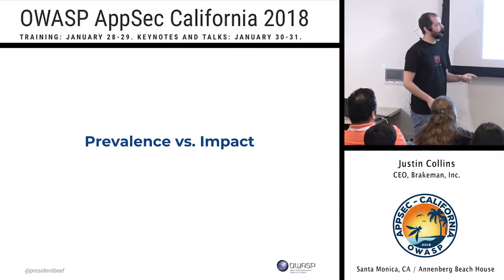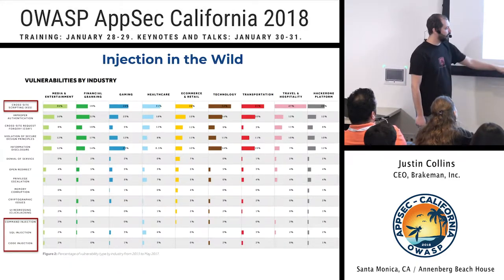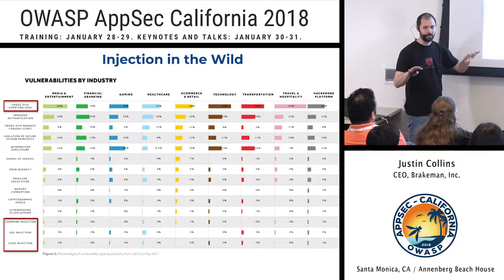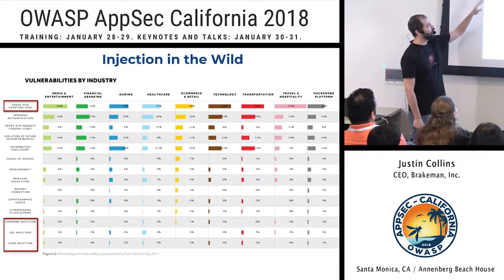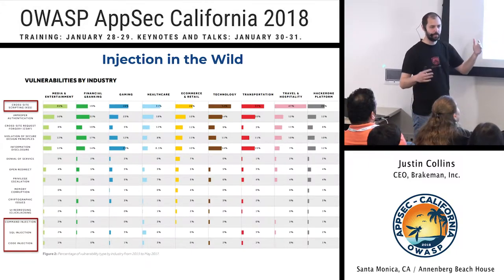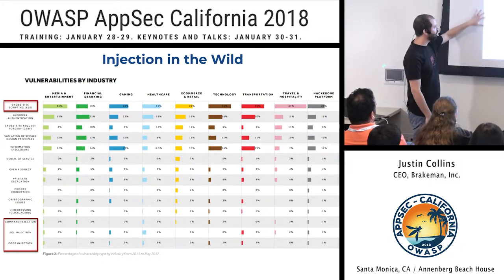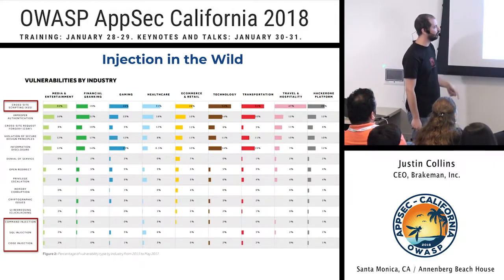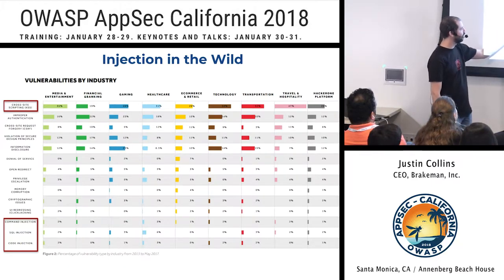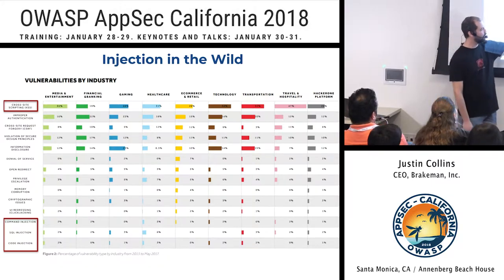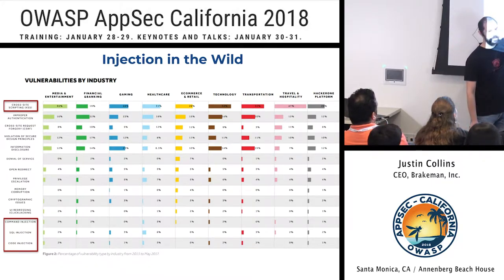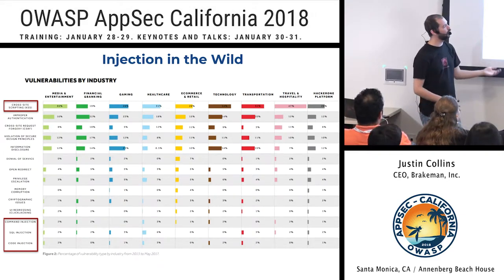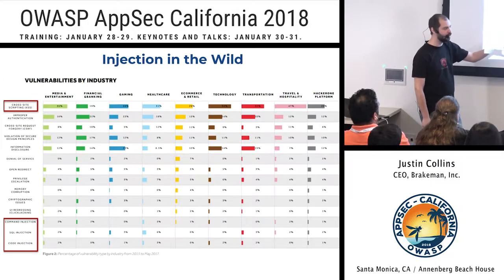Looking at prevalence versus impact: the HackerOne report covering 2013 through May 2017 shows cross-site scripting is the most common vulnerability found, which most of us would agree makes sense. More specific injections like command injection, SQL injection, and code injection are much less common — around 2–3% by industry. In the healthcare industry it's 6%, the highest measured. So injection isn't super common, but it does happen.